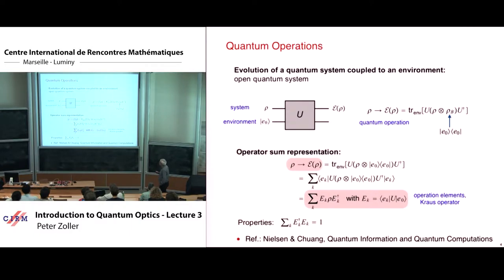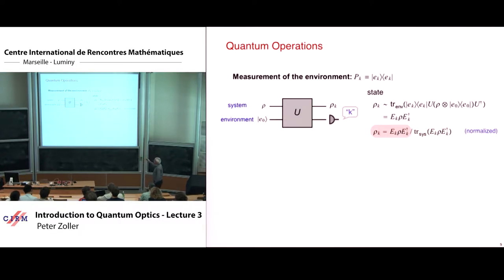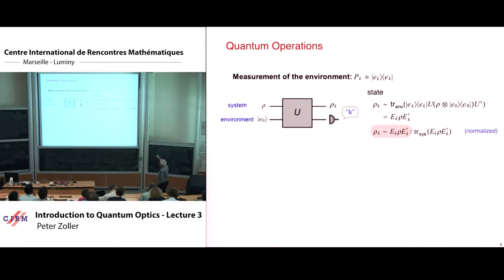This is the case of a system which is not observed — we trace over the environment. But there's a second version where you put a detector and it measures in a certain basis. Suppose the detector makes a click telling you measurement value K. Conditional on observing outcome K, the state of the system is E_k ρ E_k† divided by the normalization. The probability of seeing K is just Tr(E_k ρ E_k†). You can see the denominator is exactly these probabilities.